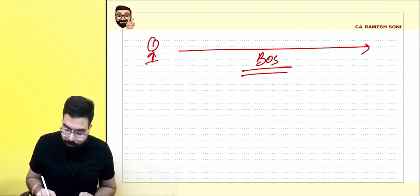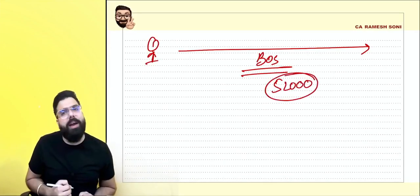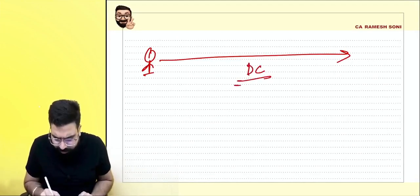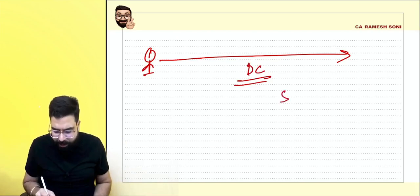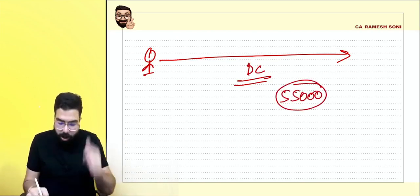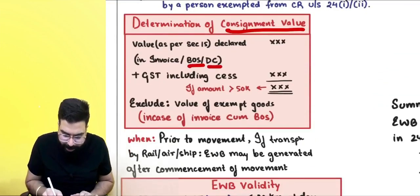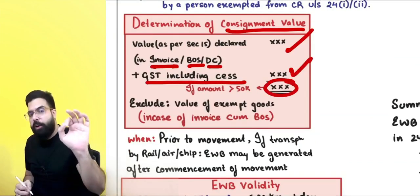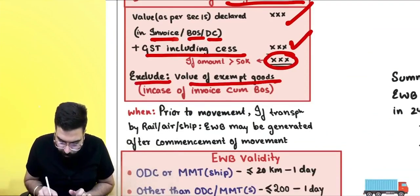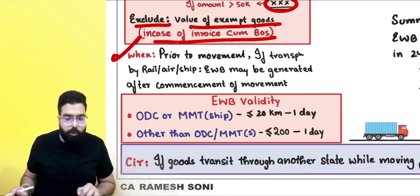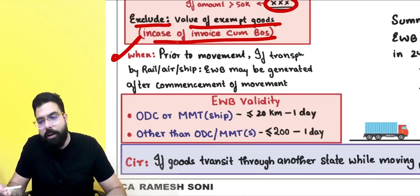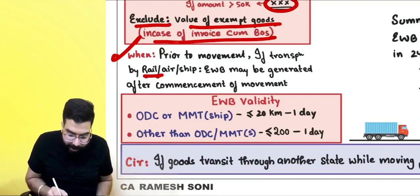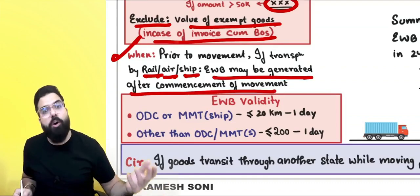For a bill of supply (no tax), if the amount is ₹52,000, e-way bill is required. For goods sent on approval via delivery challan, see the delivery challan value — if ₹55,000, e-way bill is required. For an invoice, add invoice value plus GST; exclude exempt supply value. E-way bill must be generated prior to movement for road transport; for rail, air, or ship it may be generated after commencement of movement.